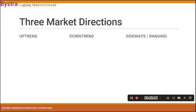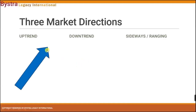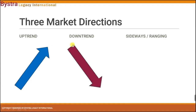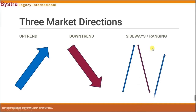There are three types of market structures. The first is the uptrend, where the price moves from the bottom to the top. Next, this is a downtrend, where the price is moving from the top to the bottom. And the last is what we call the sideways or ranging zone, where the price is zigzagging around this area.